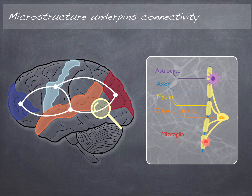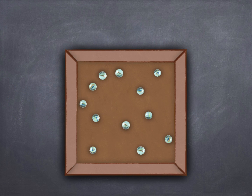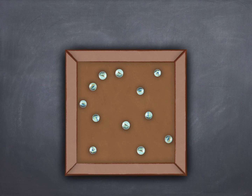Being able to map the microstructure of the brain — the astrocytes, the microglia, the axons, and the myelin — is very important in order to better understand neurological disorders, psychiatric disorders, and normal development. So how can we actually map the microstructure? How can we perform microstructure imaging? It turns out we can use diffusion-weighted imaging for that. Diffusion-weighted imaging refers to the images that come directly from MRI scanners, and we use those images to estimate a model of the microstructure. Microstructure imaging is not really an image as such — it is a model.